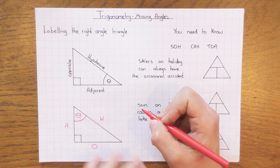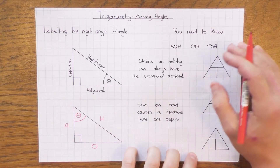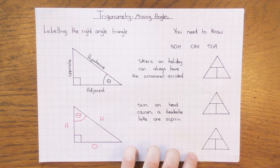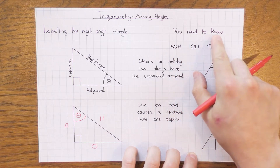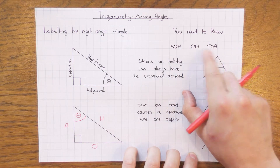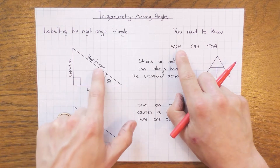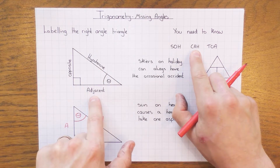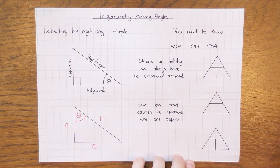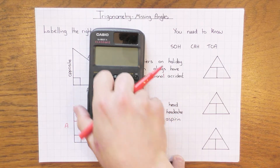That is crucial — get that right, otherwise even if everything else you do is correct, you will get no marks. The next thing you need to know is your SOH CAH TOA. O is your opposite side, H is your hypotenuse, and A is your adjacent. The S, C, and T, which you might have seen on your calculator, are your sine, cos, and tan.